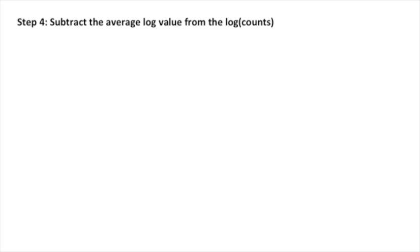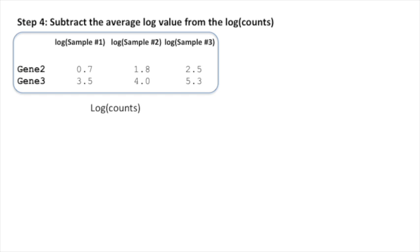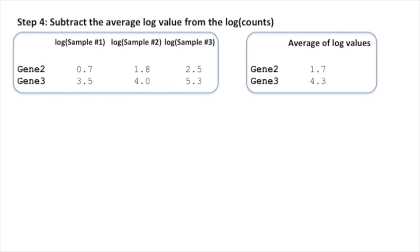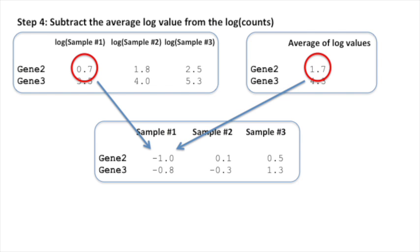Step 4, subtract the average log value from the log of the counts. Here we have the log of the counts for each gene in each sample. And here we have the average of the log values. And all we have to do is subtract that average from each sample. So in this case, for gene number 2 in sample number 1, we subtract 1.7 from 0.7. That gives us negative 1.